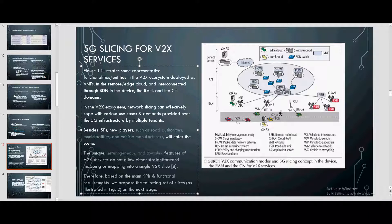5G slicing for V2X services. Figure 1 addresses some representative functionalities or entities in the V2X ecosystem that exploit VNFs in the remote or edge cloud, and interconnects through the SDN the V2X services, the RAN, and the CN domains. In the V2X ecosystem, network slicing can effectively cope with various use cases and demands over the 5G infrastructure. With multi-tenancy and new players entering with 5G ISPs, the scene will evolve significantly.